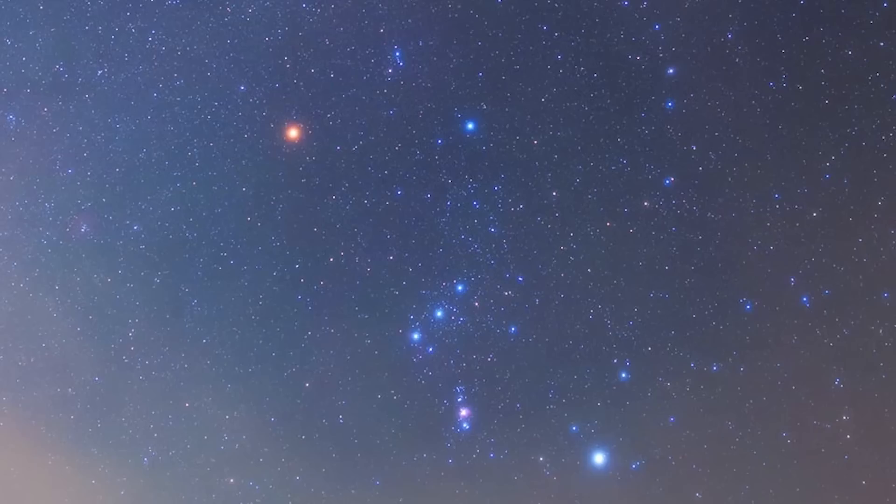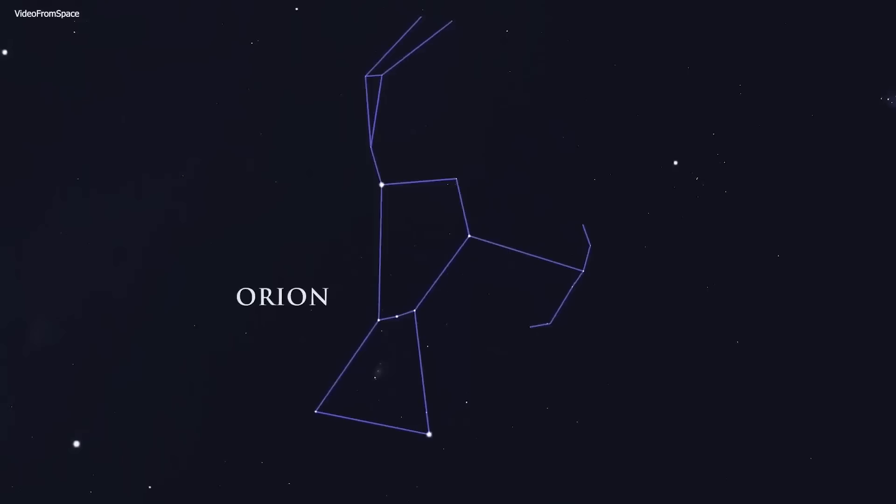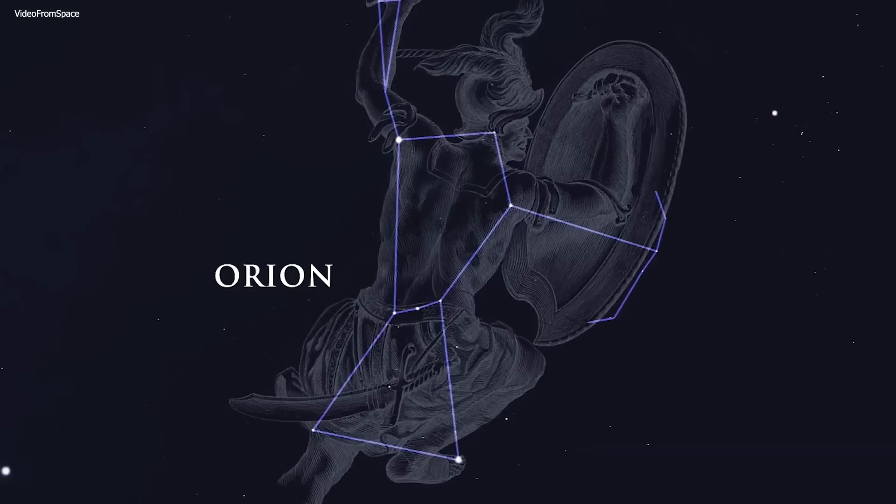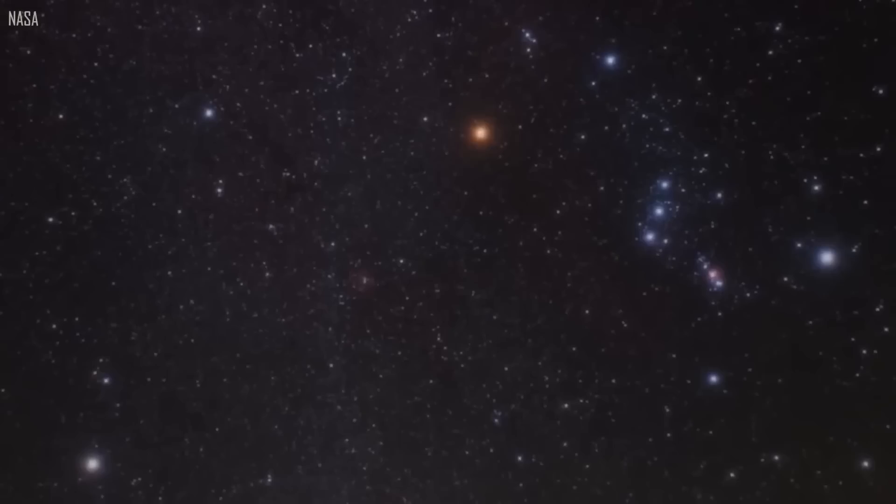Most people don't know this, but you can actually see Betelgeuse in the sky. If you're looking up at the night sky during the winter months in the Northern Hemisphere, you can't miss it. Just take a peek at the constellation Orion, and you'll spot it as the reddish-orange star that marks the upper left corner of the constellation's rectangular shape. It's one of the largest and brightest stars in the night sky, so it's hard to miss.